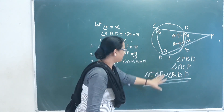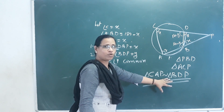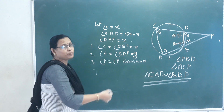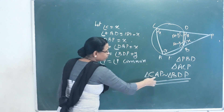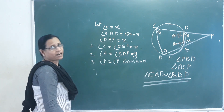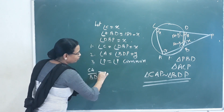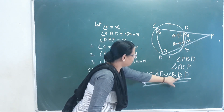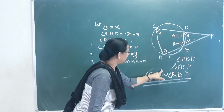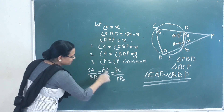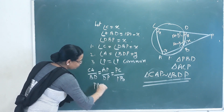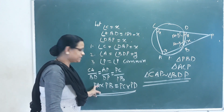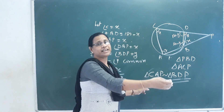These two triangles are similar triangles because angle C = angle B, angle A = angle D, and angle P is common. Therefore, by AA similarity, triangle APC ~ triangle DPB. Since similar triangles have proportional sides: CA/BD = AP/DP = PC/PB. Therefore PA × PB = PC × PD is proved.